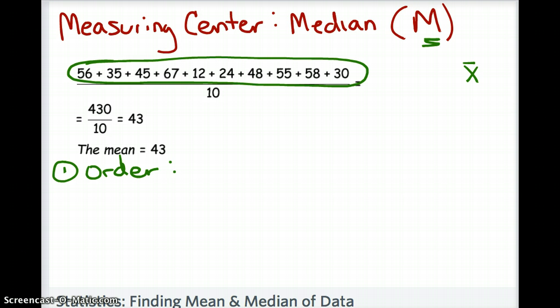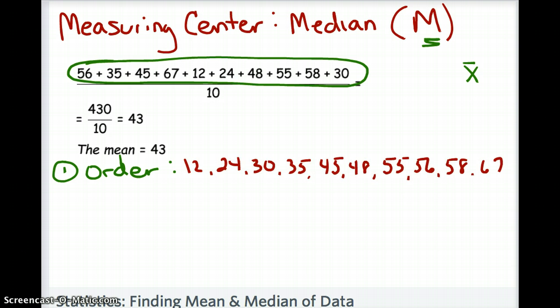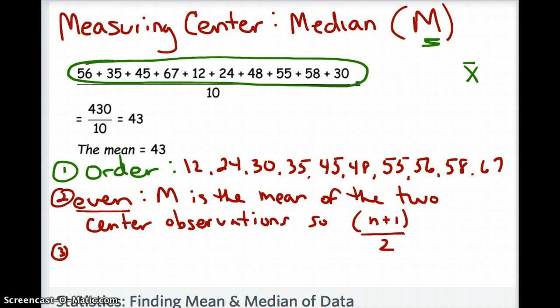Once the data is ordered from smallest to greatest, you look at how many data points there are. We know there are ten. If the number of data points is even, the median is the mean of the two center observations, found using (n+1)/2. With n=10: 10 plus 1 is 11, divided by 2 is 5.5, so we go to the 5.5th position — meaning we take the average of the 5th and 6th values.